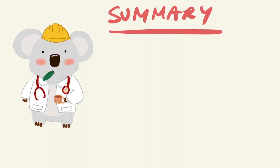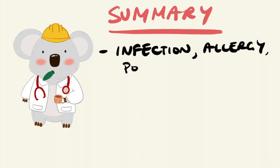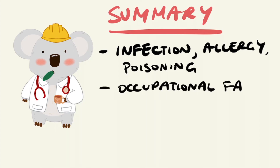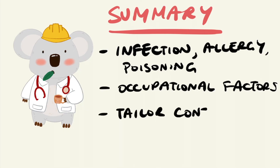In summary, biological hazards can have a number of health effects on the body, namely infection, allergy, and poisoning. Occupational factors can also be important in determining the risk of exposure, namely the type of work as well as the location and environment. It's important to tailor your controls to the specific biological hazards that a worker will be exposed to in their occupation.